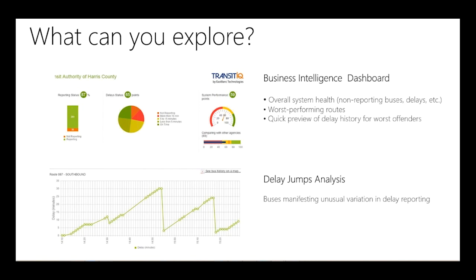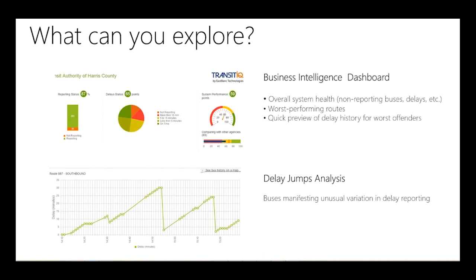We also have a large part of our business intelligence dedicated to anomaly detection — anomalies we see with the devices deployed on buses that report bus position and delay information. On this screen you see what we call delay jumps: when a bus reports it's delayed one minute, two minutes, one minute, one minute, and then suddenly says it's delayed 30 minutes, and then back to one minute. Those are the anomalies we detect and present as a list of worst offenders — it usually means some algorithm or device hardware is working incorrectly on that bus.